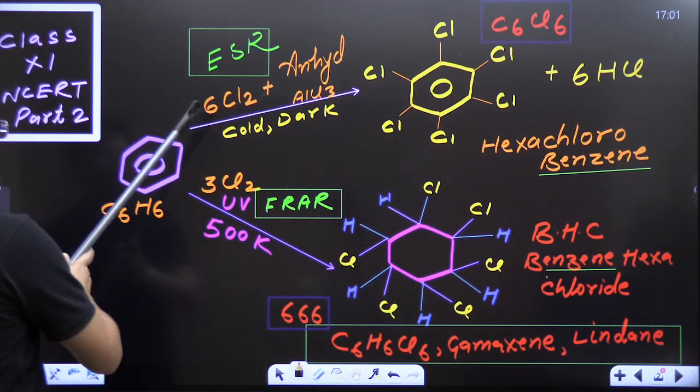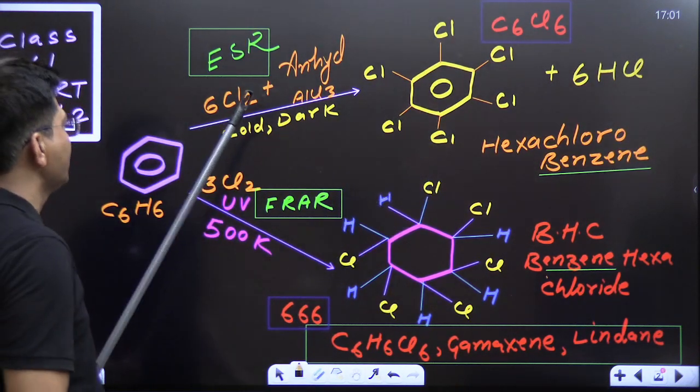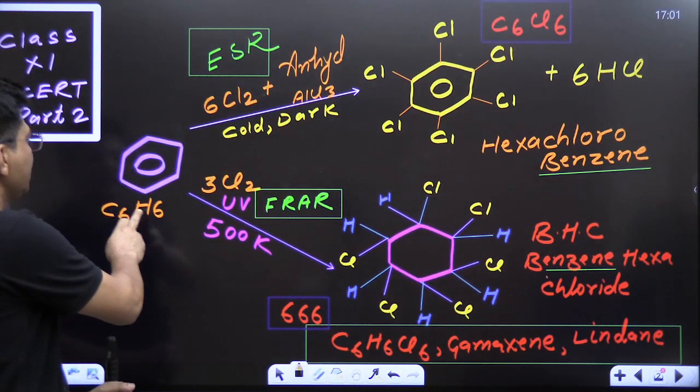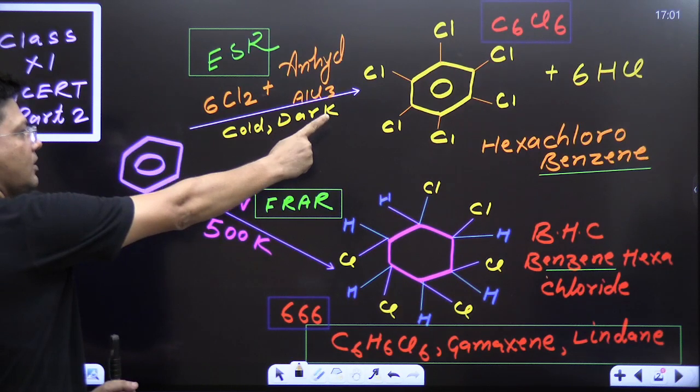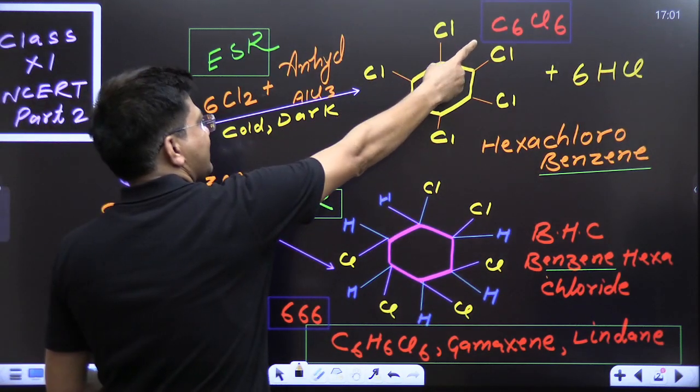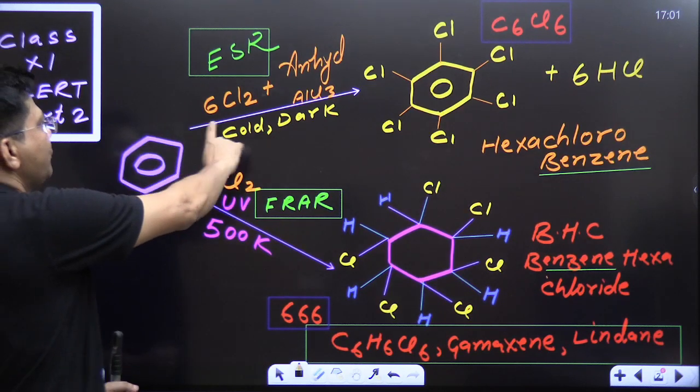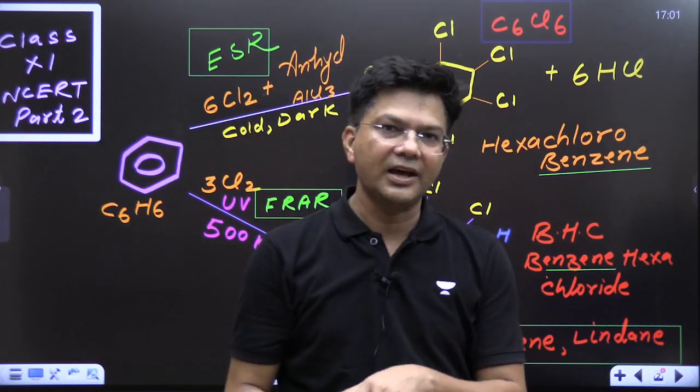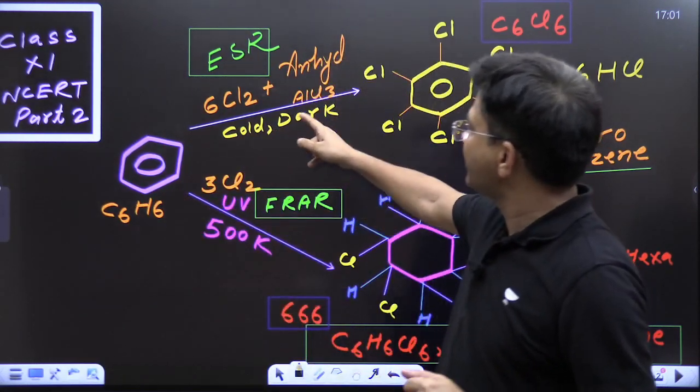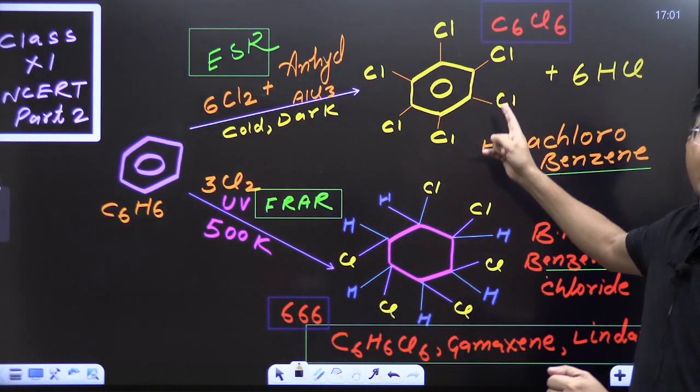This benzene is reacting with chlorine. Here it is giving hexachlorobenzene. Just you can see. This benzene is C6H6. And that compound is C6Cl6. So you can see very clearly that in the first reaction, this benzene has lost six hydrogen atoms. And in place of six hydrogen atoms, it has bonded with six chlorine atoms.